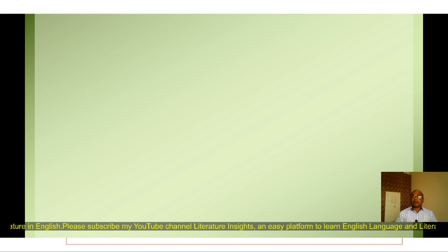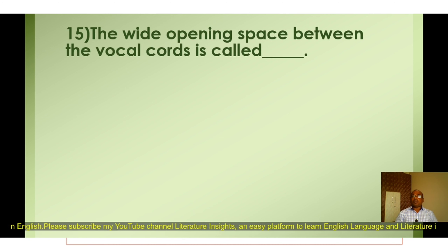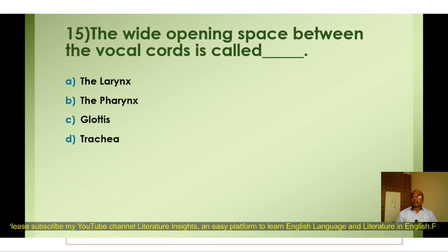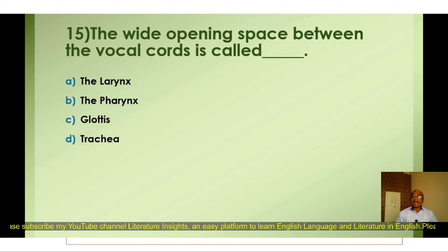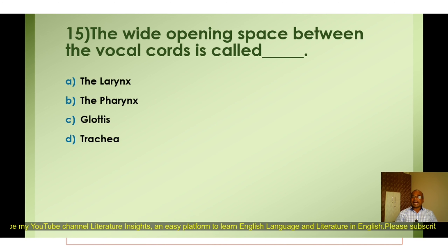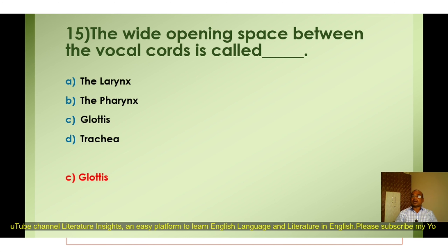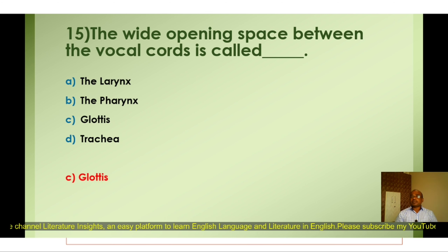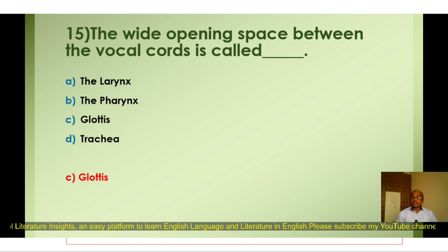Question number fifteen: The wide opening space between the vocal cords is called — A) The larynx, B) The pharynx, C) Glottis, D) Trachea. The correct option is C) Glottis. The wide opening space between the vocal cords is called the glottis.